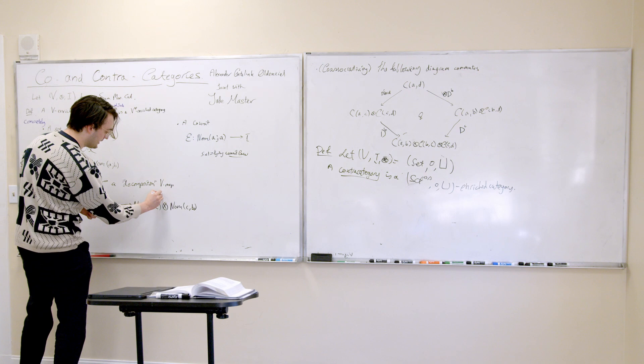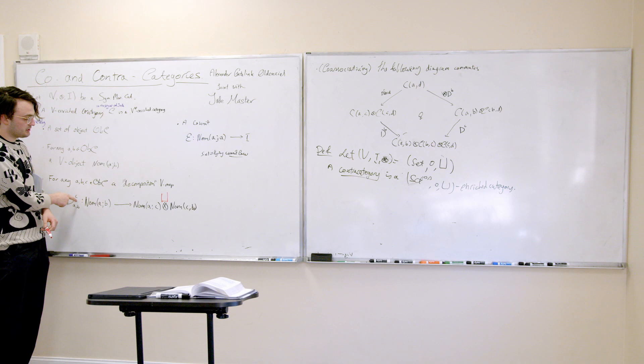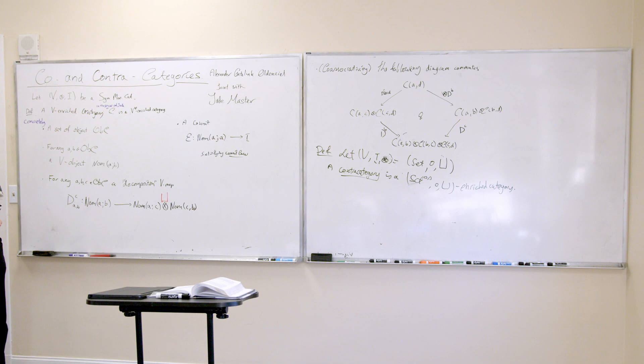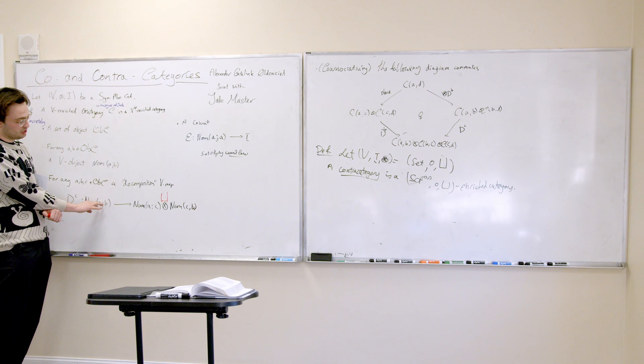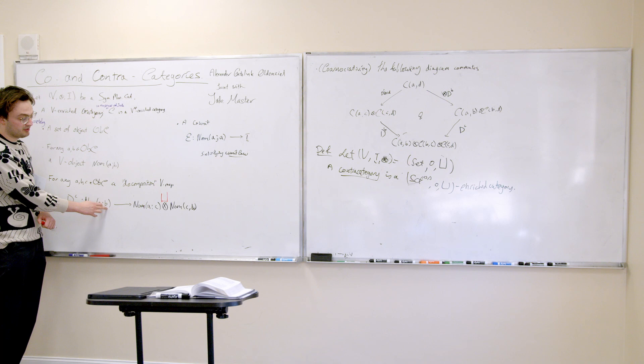A contra-category is set op, zero, disjoint union, every two categories. Since we're in set, if I have an element and apply it to the decomposition operator, I actually have to make a choice. Do I go left or do I go right? These contra-categories encode a particular kind of co-category theory, where decomposition is important to make sense.